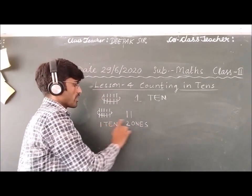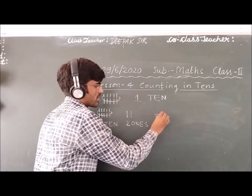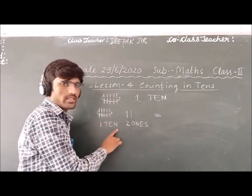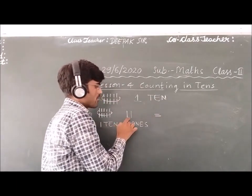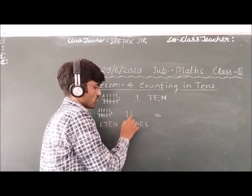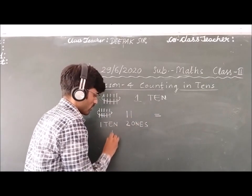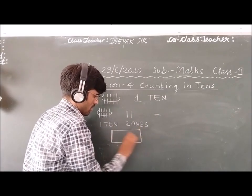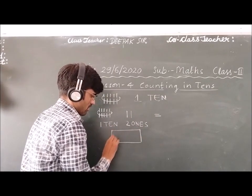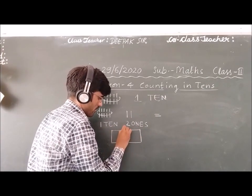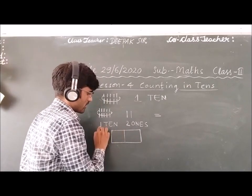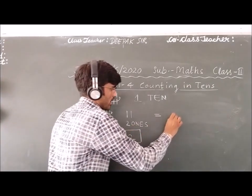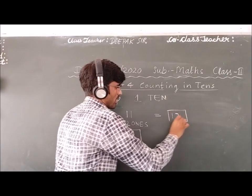So how many total lines are here? Total lines — one ten. We have 10 plus 2. This is one ten and this is two ones. So the total is 12.